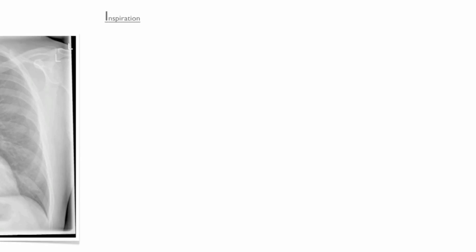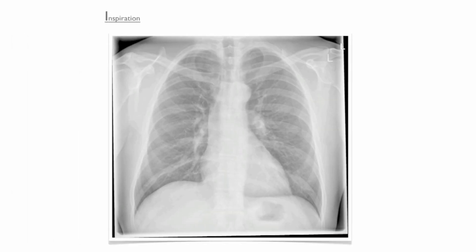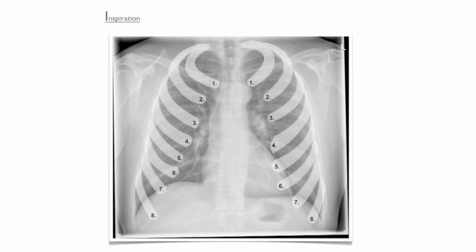The next four items in our mnemonic review the technical quality of the radiograph, starting with Inspiration. Inspiration is assessed by counting the anterior ribs. There should be six anterior ribs above the diaphragm. The seventh rib should penetrate through the diaphragm. If the seventh rib is above the diaphragm, this suggests hyperinflation.